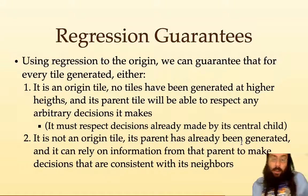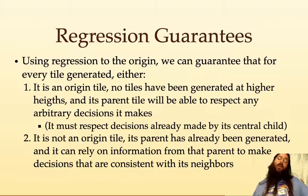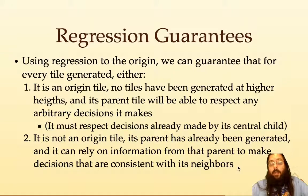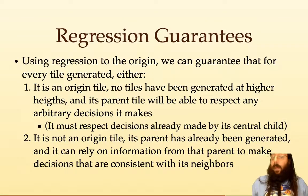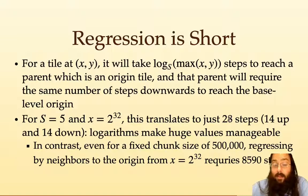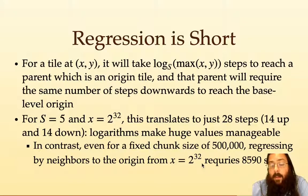What guarantees do we get? If you're an origin tile, no tiles have been generated at higher heights nor any of your siblings at the same height — you're the first tile at that height to be generated. You can make whatever decisions you want and others will respect those constraints, as long as you respect your center child's decisions. If you're not an origin tile, your parent must already be generated, so you can rely on that information to know what your neighbors are doing before making your own decisions. This regression is short: taking log base 5 of 2^32 is just 28 steps to get to the origin, even from max int. In contrast, going neighbor-by-neighbor from 2^32 with steps of 500,000 would take thousands of steps.